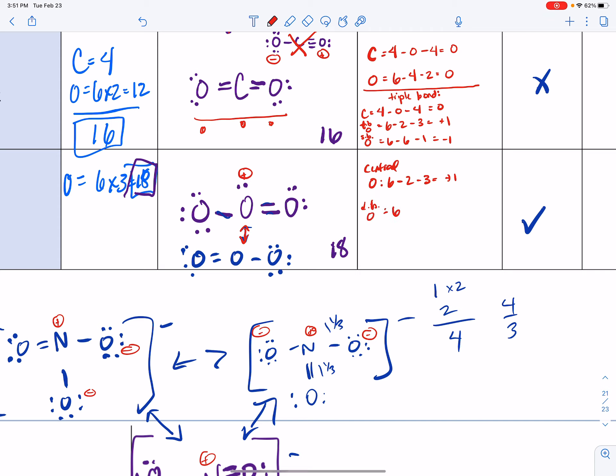And then we have the single bonded oxygen, which is six minus six minus one, which is zero. Wait a second—which is negative one, right? That's—how do you get zero? So it is good that these charges are on side-by-side atoms. That's a good thing.